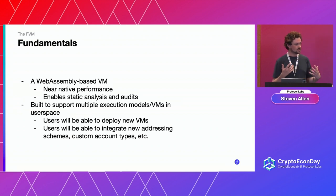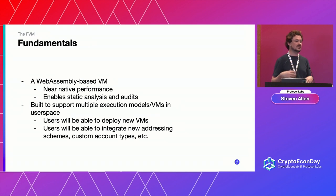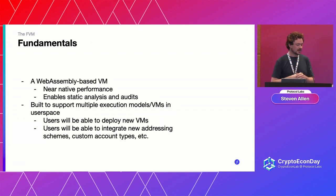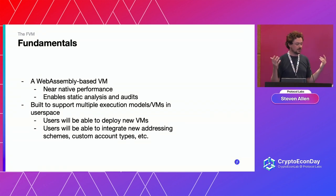One of the goals with the FVM was to support multiple execution models and VMs in user space, not just to be stuck with our own custom VM. This is another reason to choose WebAssembly — it's so fast that we can literally run another VM inside our VM, and the performance isn't quite native, but it's still very good. We need to make sure that any features we add to support the EVM are general-purpose and can be used to support whatever VM you might want to run.